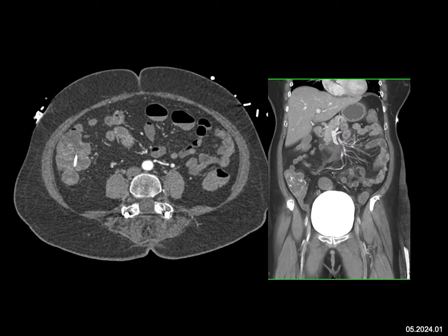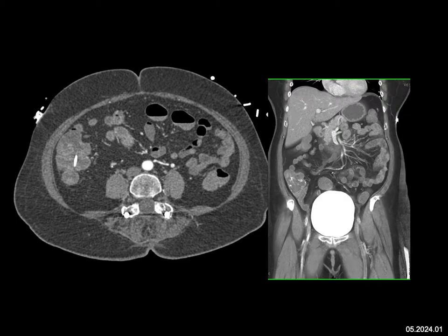When I look at the cecum, I see a clip, which means the patient had a polyp and the polyp was removed. When you look carefully at the axial views and the volume rendered views, in addition to the clip, you see other high-density zones — this was bleeding in the cecum following polyp removal, one of the complications that usually goes away on its own without any intervention. We told the referring clinician, the patient was admitted, and did fine.